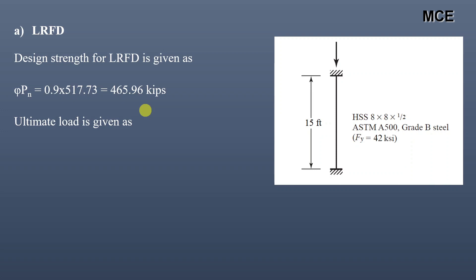Ultimate load of column is given as 1.2 times the dead load plus 1.6 times the live load, which is equal to 1.2 times 175 plus 1.6 times 100, which is equal to 370 kips.